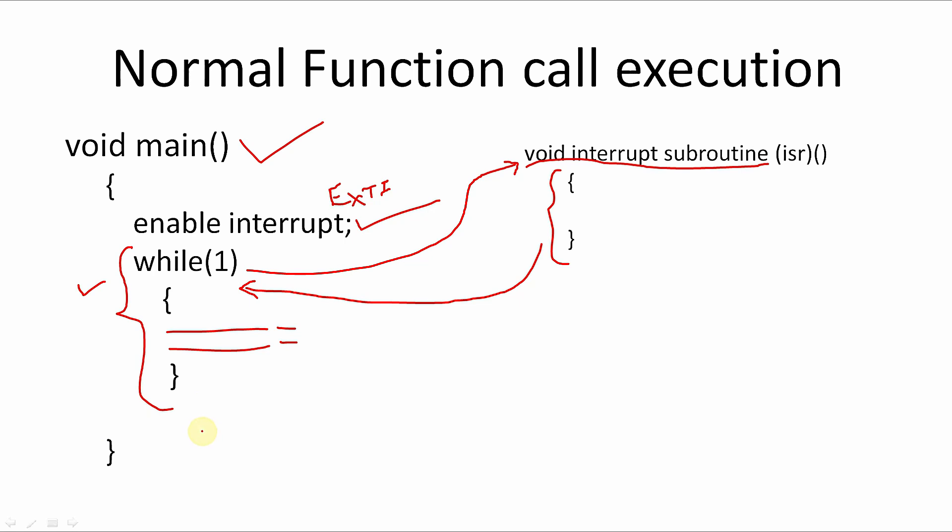This is the normal flow of an interrupt function call. Whenever an interrupt is triggered, the program execution pauses whatever it was doing inside the main function or while(1), moves to the interrupt service routine function, executes all the lines inside it, and after completing execution it comes back to the main function from where it left off and resumes from the line it had left before the ISR call.